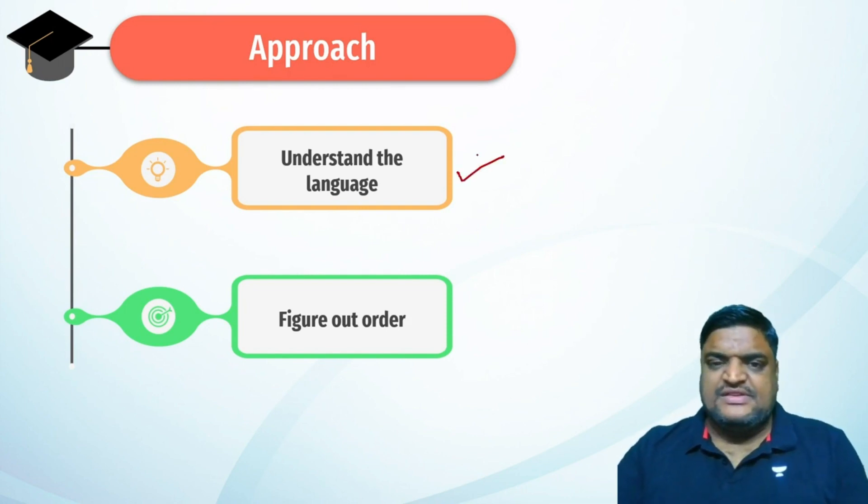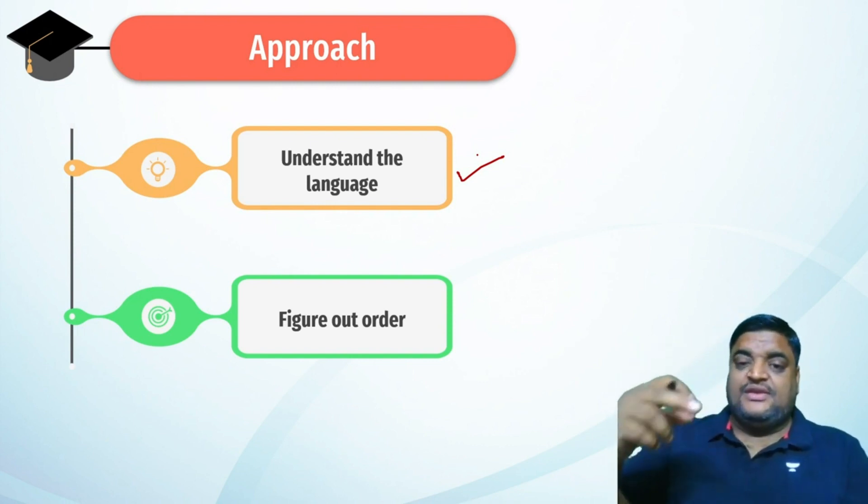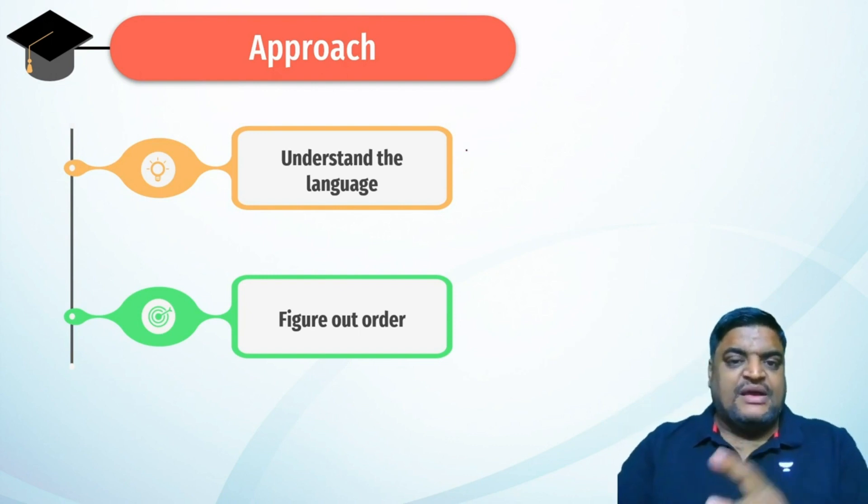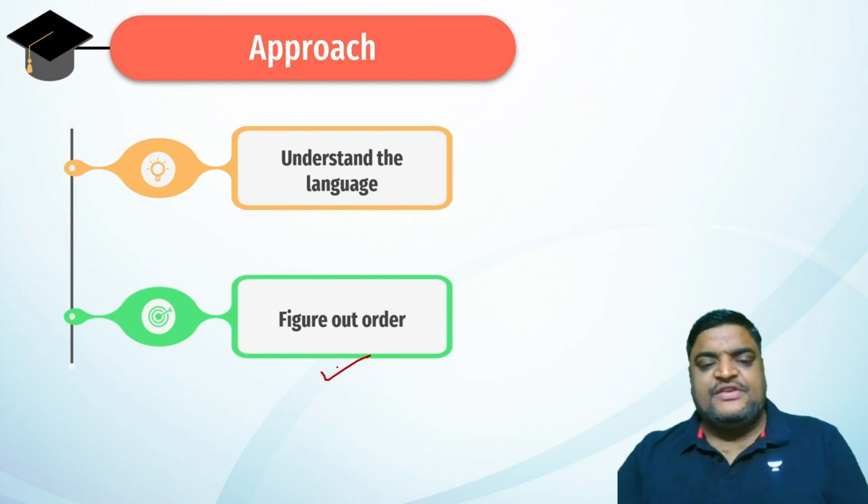Understanding the language plays a very important role because the language is always tricky. You need to understand what it is trying to convey. The second thing is figure out the order of the clues.